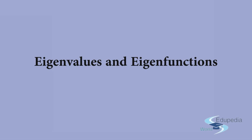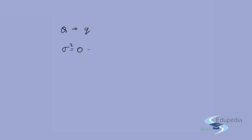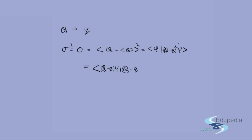Let's say we have an operator Q and it has a determinate state where every measurement gives the value small q. In that case, sigma squared — the variance — will be 0. That is written as the expectation of (Q minus q) squared, which becomes the inner product of (Q minus q)ψ with itself. Since this inner product equals 0, the vector itself must be 0.